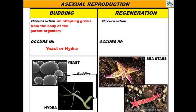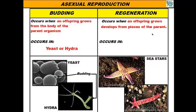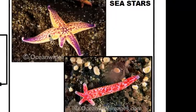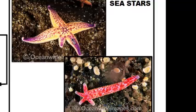The last process is regeneration, which occurs when an offspring grows and develops from a piece of the parent. The parent loses a piece of itself, and that piece can turn into a brand new organism. Sea stars are famous for this. Sometimes you see a sea star with three normal-sized legs and two really short ones — those short legs were ripped off, but the cells at the site of injury regenerate brand new legs.